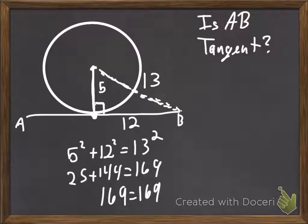So, because this is a right triangle, that means that this right angle does exist. So, our answer is yes. It is a tangent.